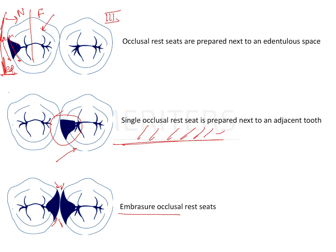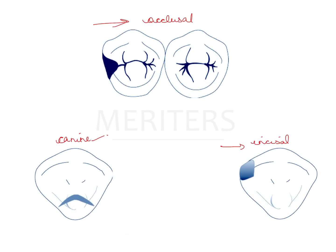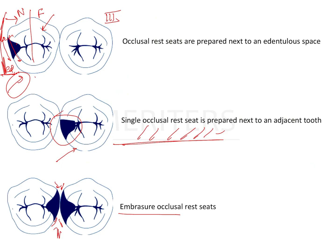One more design consideration: in a Kennedy's class 3 situation where there is a posterior molar, the molar will likely be tipped towards the edentulous area. In that case, the occlusal rest is prepared more divergent — similar to the first category of rest seat preparation. The option of interproximal occlusal means extending the occlusal rest preparation interproximally, like in an embrasure clasp, which is also an indication for Kennedy's class 3 or Kennedy's class 2 with a modification.